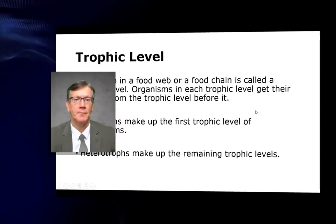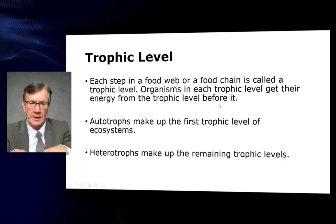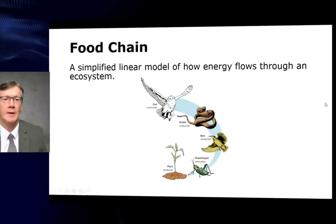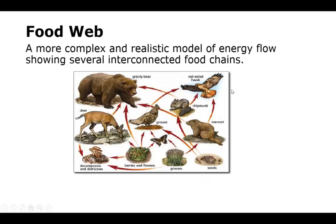Models of energy flow. Each step in a food web or food chain is called a trophic level. Organisms in each trophic level get their energy from the trophic level below it. Autotrophs make up the first trophic level; heterotrophs make up the remaining levels. A food chain is a simplified linear model of how energy flows through an ecosystem — for example, a plant is eaten by a grasshopper, which is eaten by a bird, which is eaten by a snake, which is eaten by an owl. A food web is a more complex and realistic model of energy flow showing several interconnected food chains.